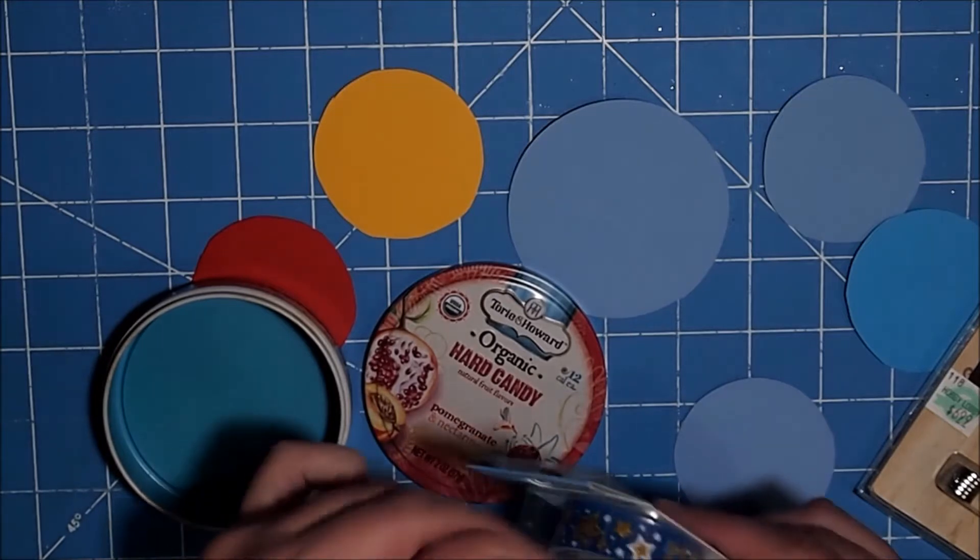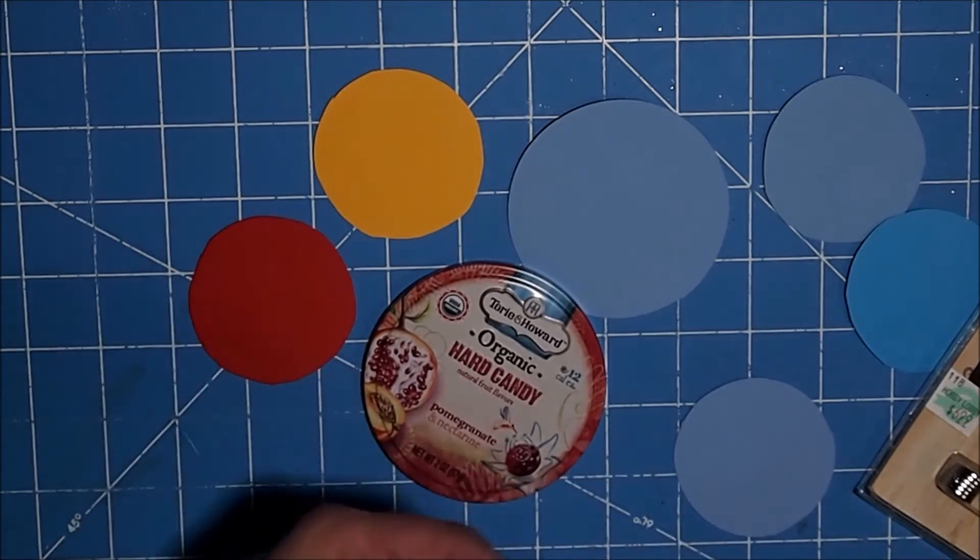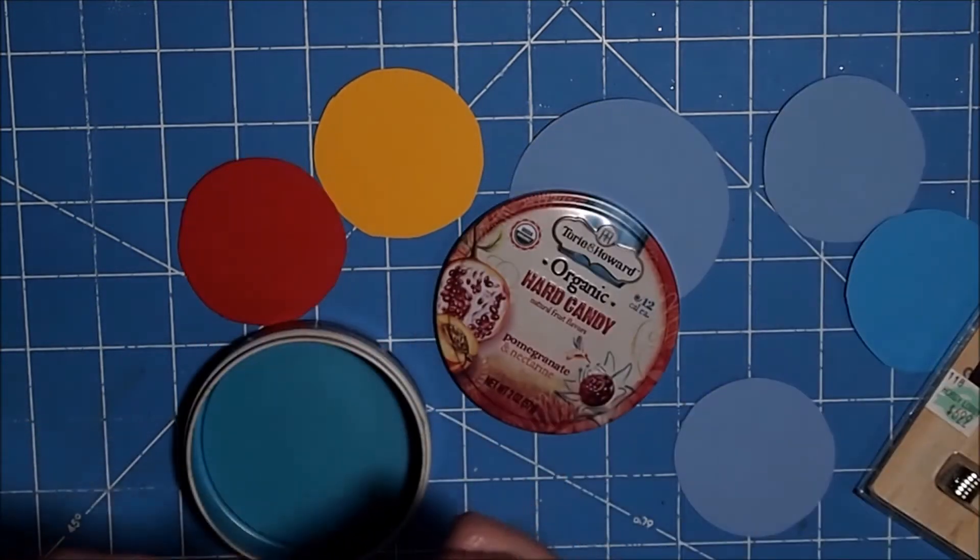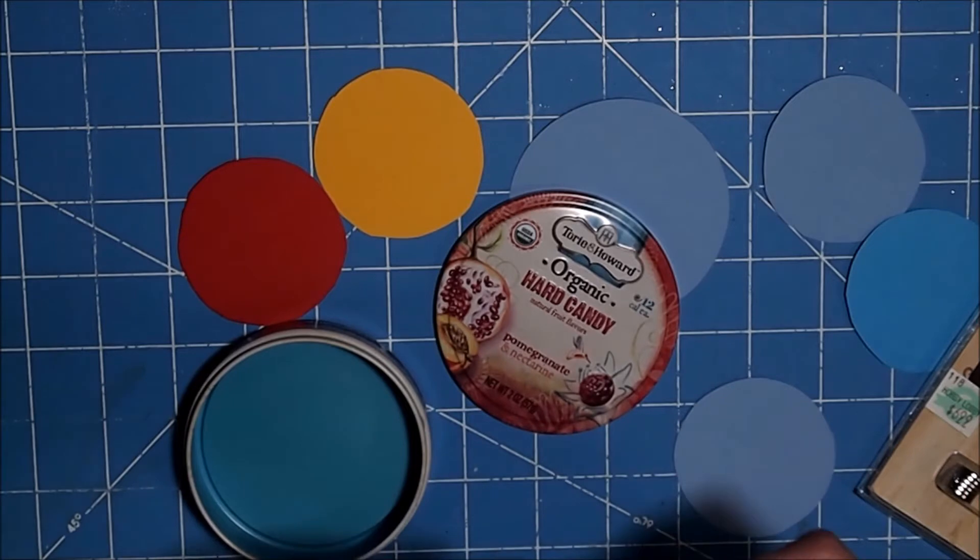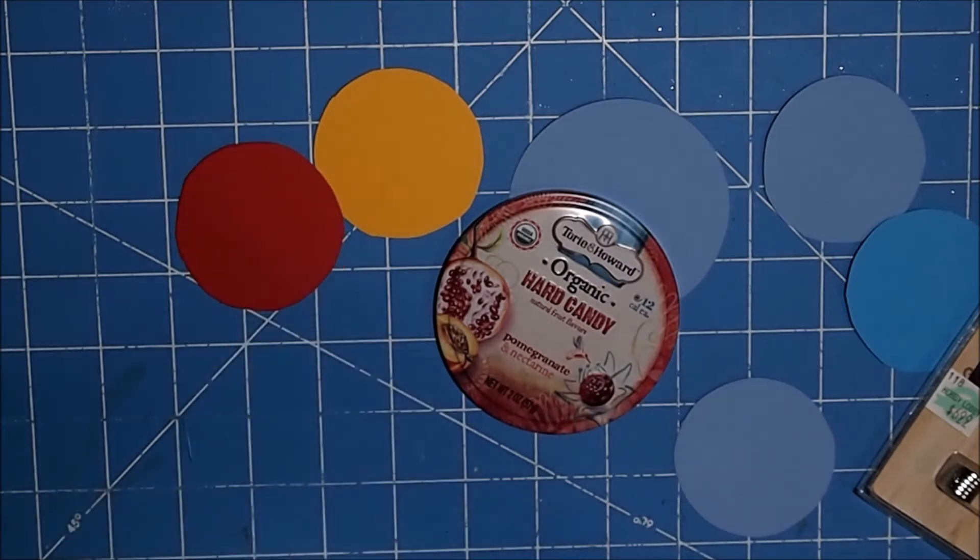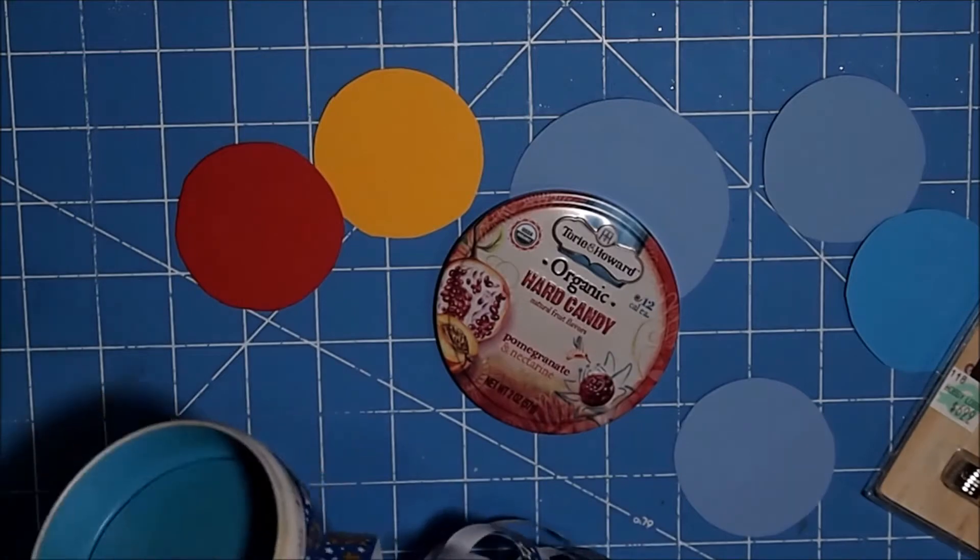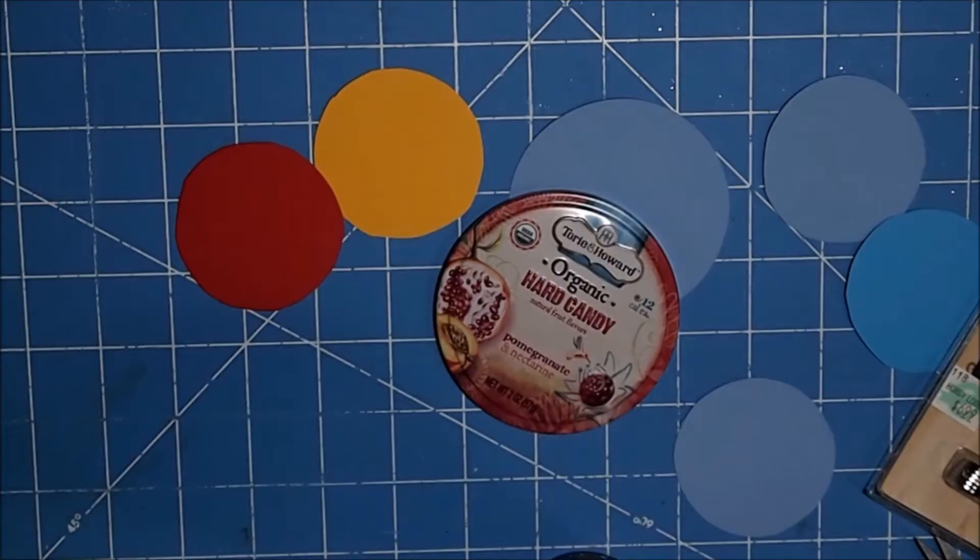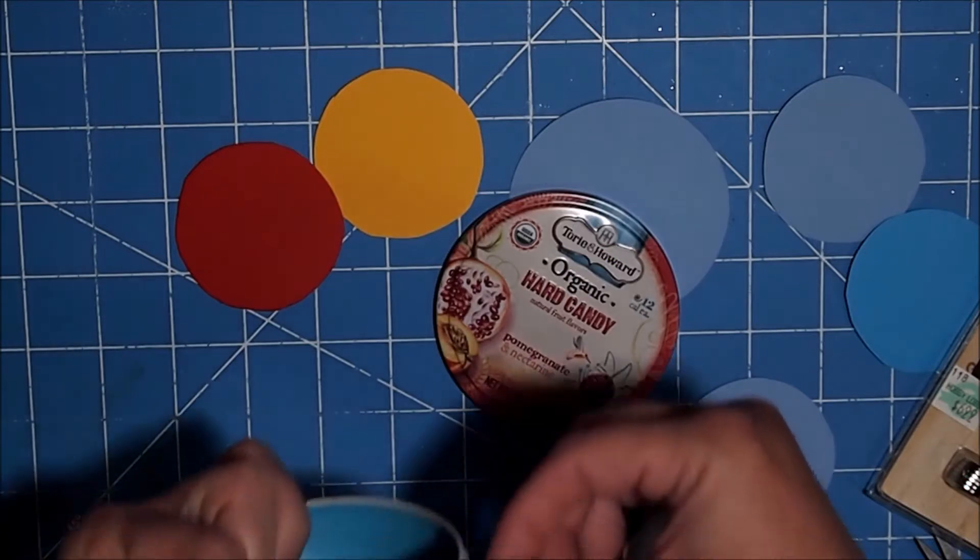I'm going to use this washi tape that I picked up at the dollar store to just cover my tin. I'm just going to cover my tin to make it look pretty, so it looks like I put some thought into it instead of just throwing them into a tin. I'm going right under where the lip is so that the lip will fit really nicely.